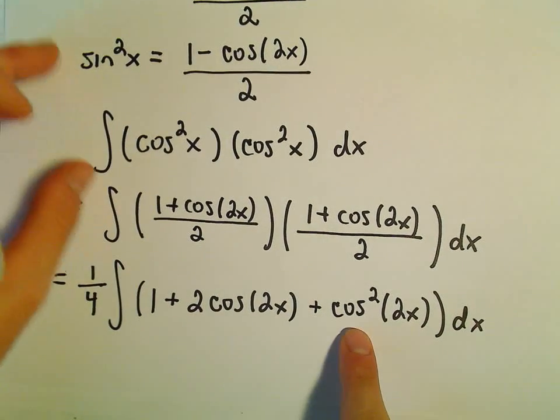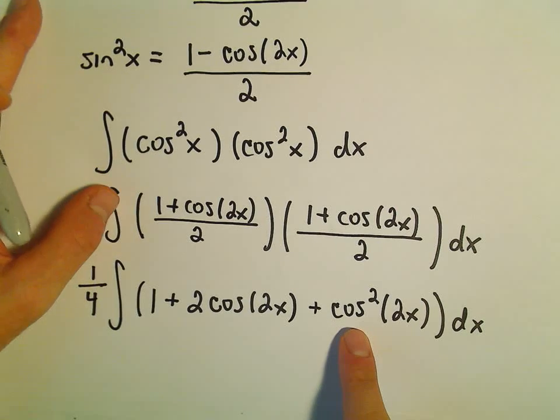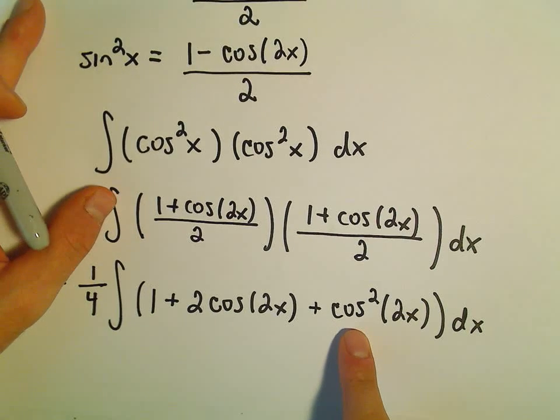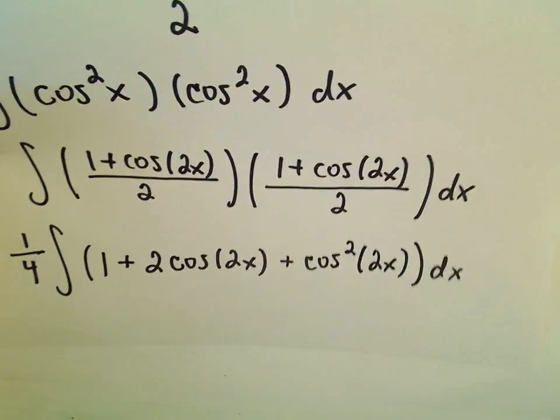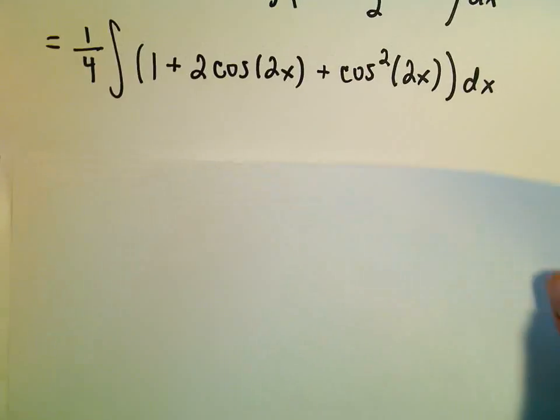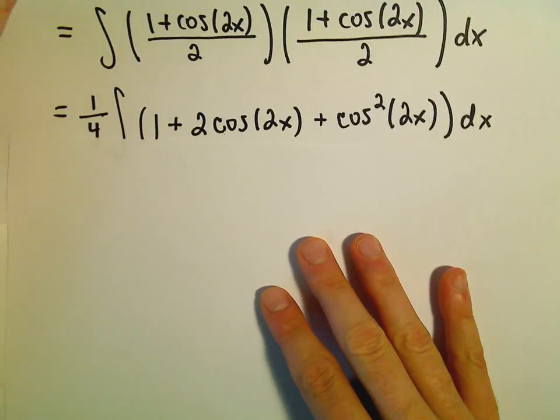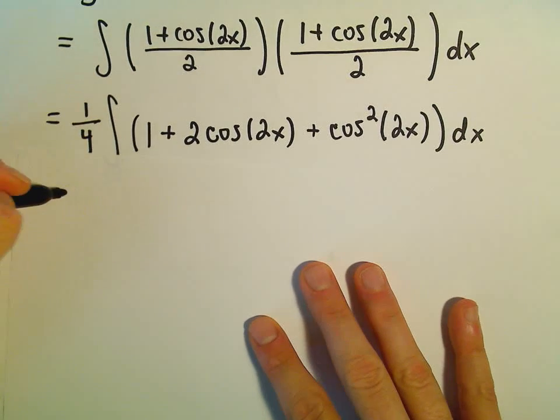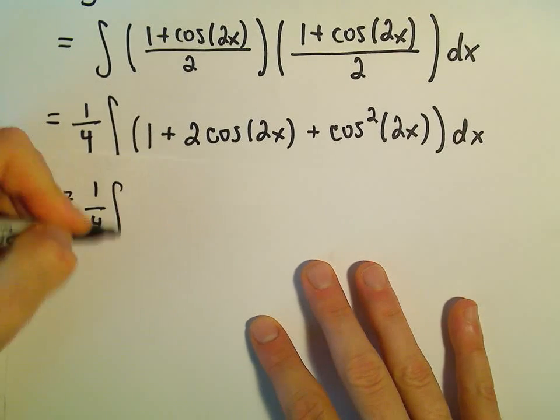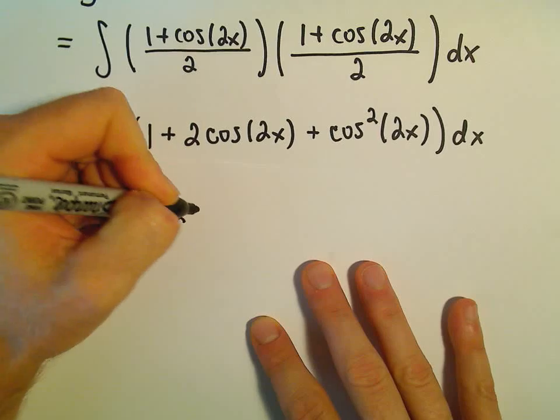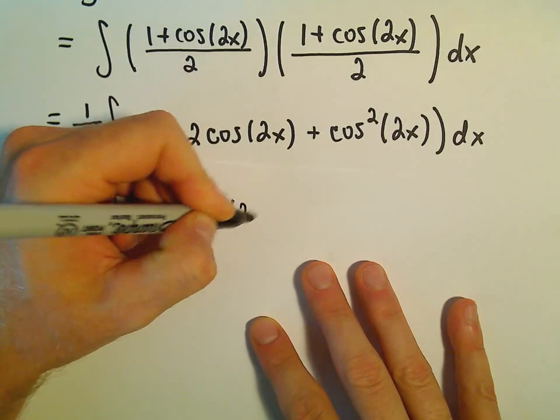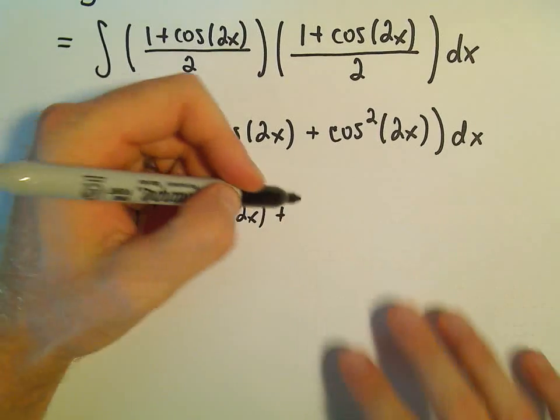Now what we have to do in this case, notice we ended up with the squared term again. We'll basically have to go back and use our identity one more time. So I'm going to keep rewriting everything here. So we've got 1 fourth, the integral of 1 plus 2 cosine of 2x. And then I'm going to use our identity again.